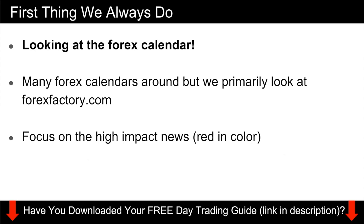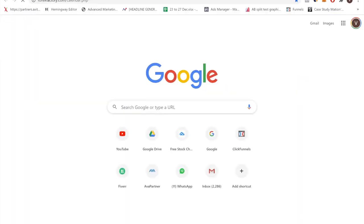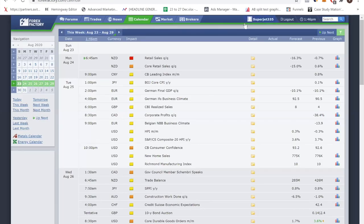Let me walk you through how this calendar works. You want to focus on the high-impact news — the ones in red. Right now I'm at forexfactory.com, and you can see this is the calendar for next week. You can toggle around the weeks, and in this case I'm already looking at the next trading week ahead, which is the 24th of August.